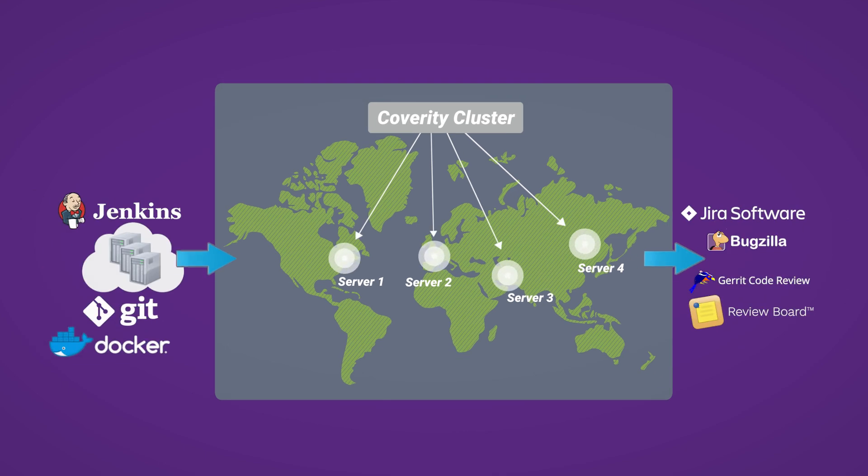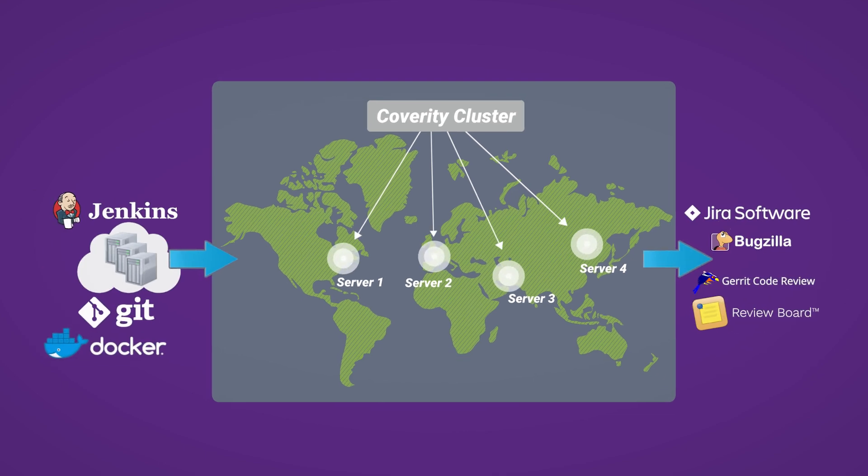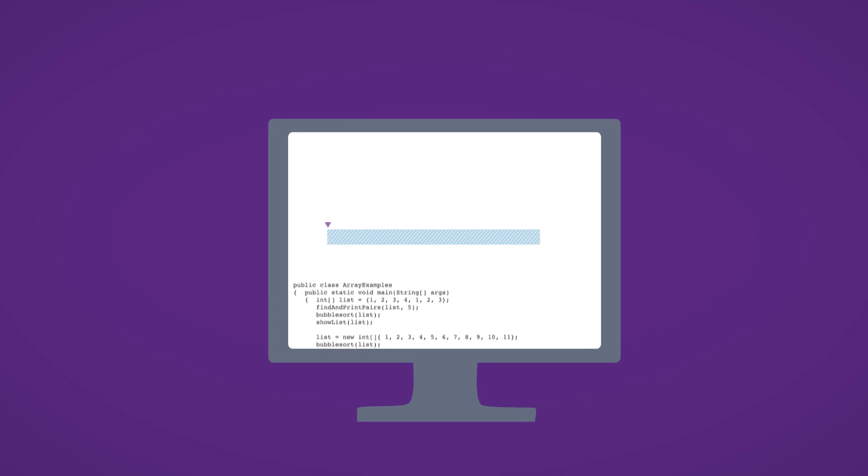Plus, it uses interprocedural analysis, false-path pruning, and more than 20 complementary analysis engines to find software flaws and security vulnerabilities that other solutions can't. Coverity scales to accommodate thousands of developers working around the world, and it can analyze projects with over 100 million lines of code easily and efficiently.